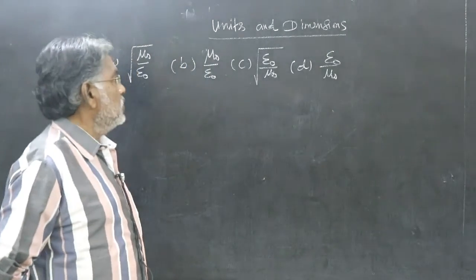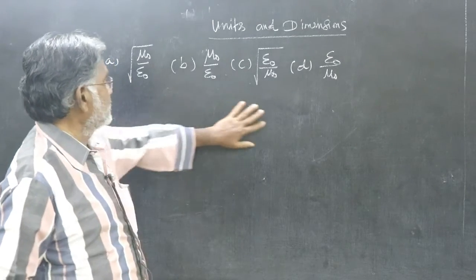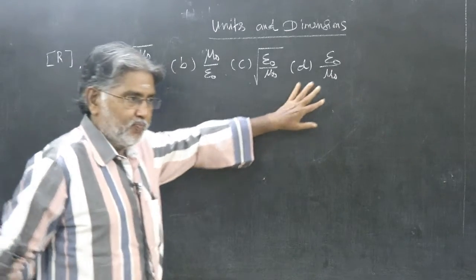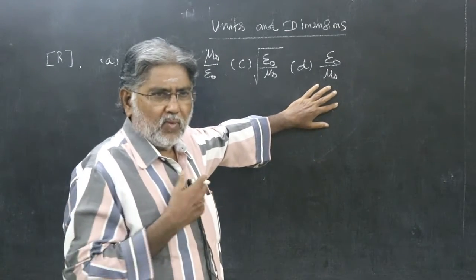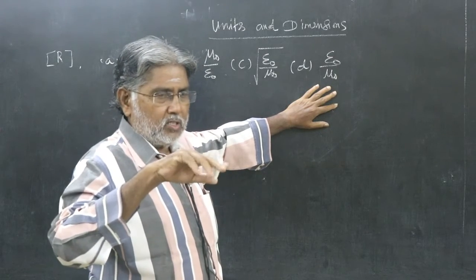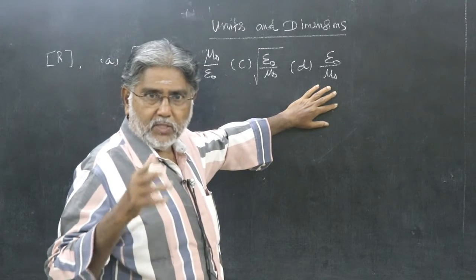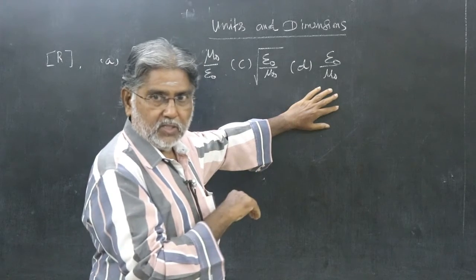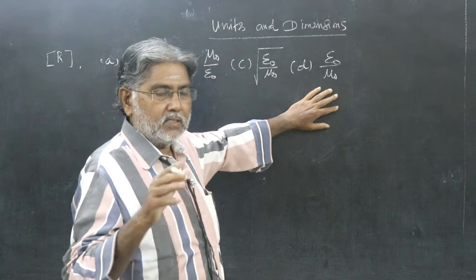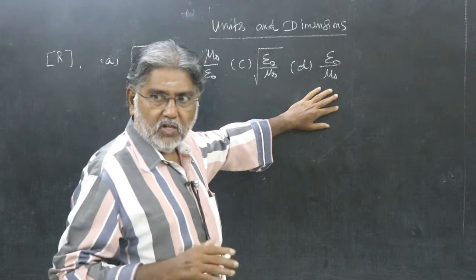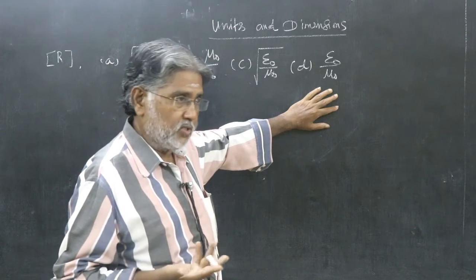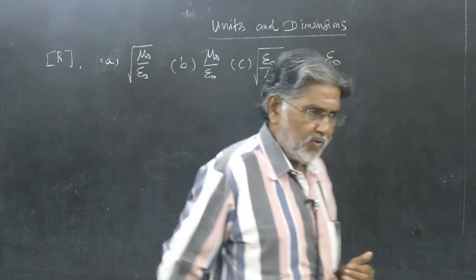So you are given all these options. What will be the direct method? Direct method: Epsilon naught, dimension of epsilon naught, say raise to power x. Dimension of mu naught, raise to power y. Left side, dimension of R raise, keep as it is. Then simplify. Then find the value of x and y. You will get equations, simultaneous equations. You will have to solve for x and y. That is a formal method.